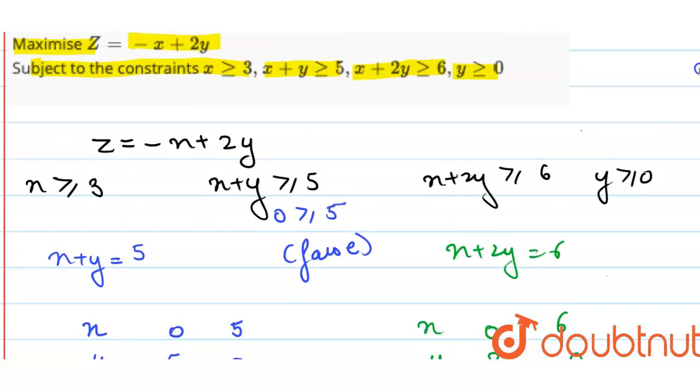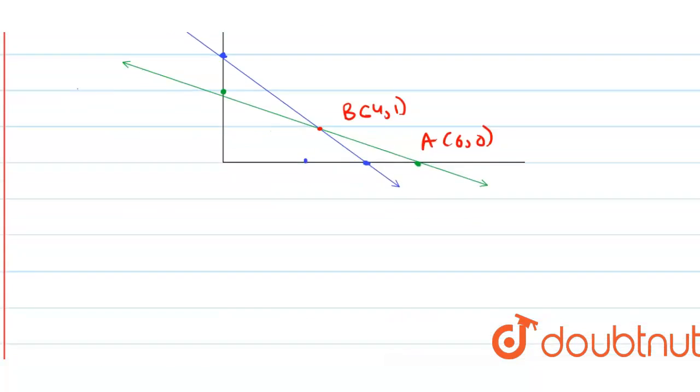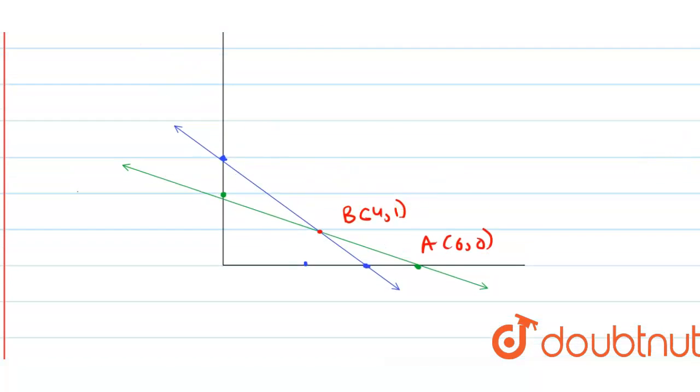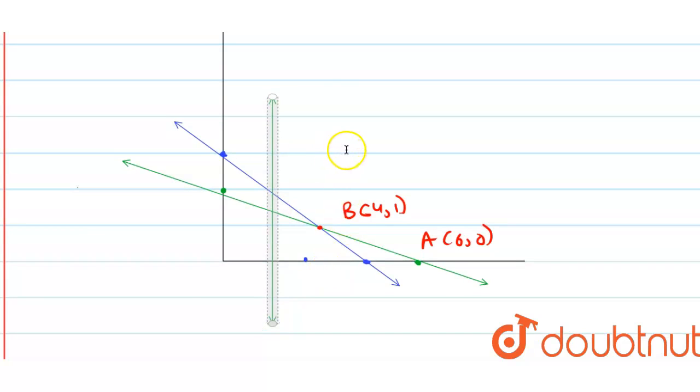Now the third point is x is greater than or equal to 3. So this line will pass straight through it. Suppose this is the point x equals 3. This is the line for x equals 3.